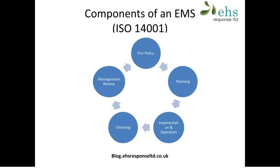The next phase is called implementation and operation. This covers quite a number of different areas, including having defined responsibilities for environmental management within the organisation. It also includes things like procedures and a manual that describes the system overall. You need to control operations that have a significant impact on the environment — known as operational control — and you also need to plan for emergencies and mitigate their consequences if they occur.